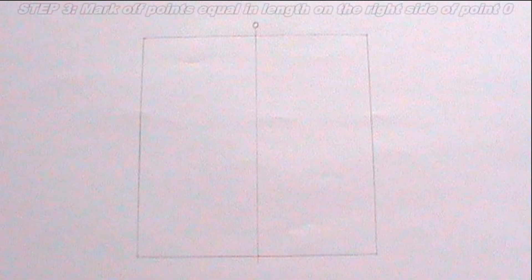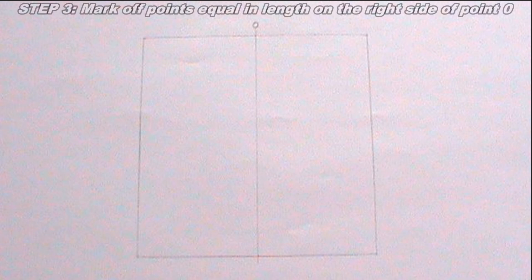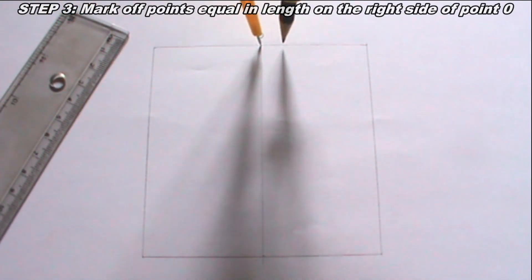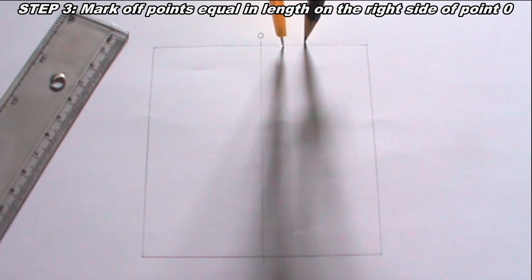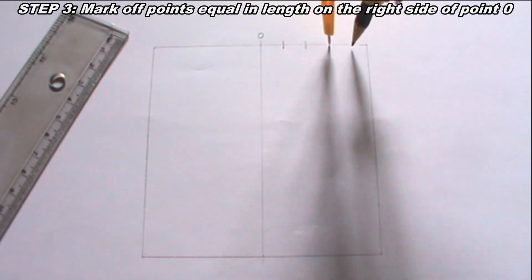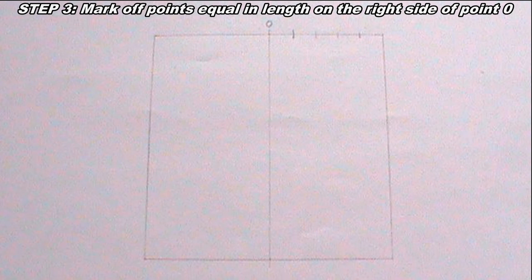I will label the point where the vertical line intersects the square at the top zero. The next step I will take is to use my compass to mark off points equal in length on the right side of point zero. This step can be done this way. Having done that, I will label the points I marked, 1, 2, 3, 4, and the end of the line 5.